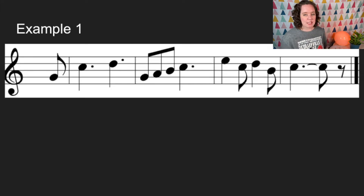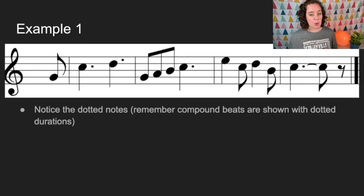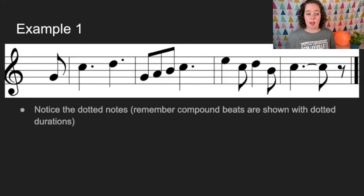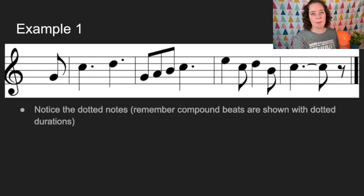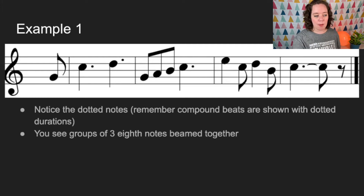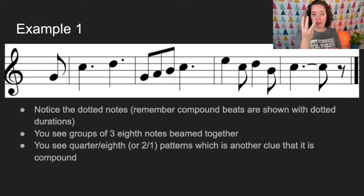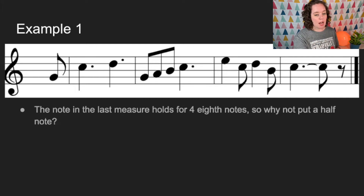Here's an example. First we notice there are quite a few dotted notes. Dotted notes are what we use in compound meter to show the main beats of the measure. We can also see a group of three eighth notes beamed together — usually the only time we see eighth notes beamed in threes is in compound meter. There's also a quarter-eighth pattern, another clear indication of compound meter.